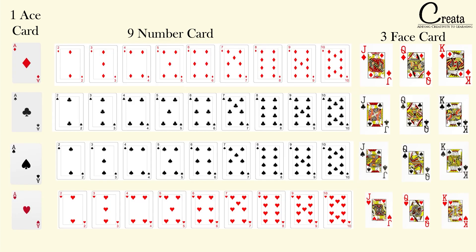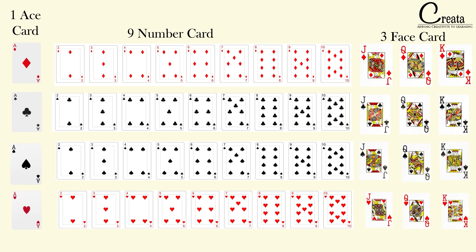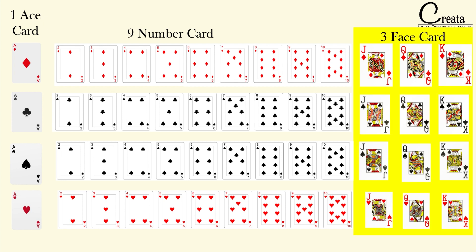Further, if I ask you a question — how many Ace cards are there? The answer will be there will be total 4 Ace cards: 1 in diamond, 1 in club, 1 in spade, and 1 in heart. And if I ask you how many kings will be there? There will be total 4 kings. Further, how many face cards are there in the total set? There will be total 3 plus 3 plus 3 plus 3, that is total 12 face cards.